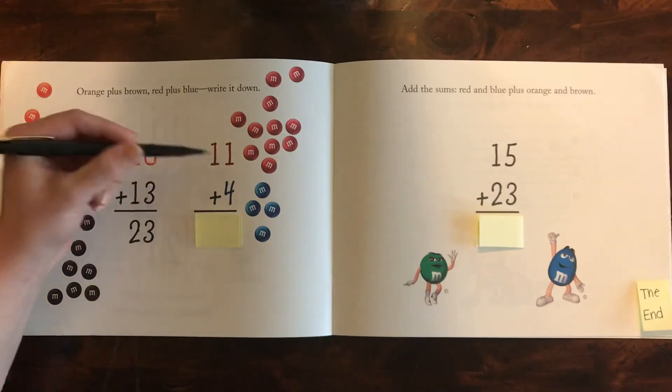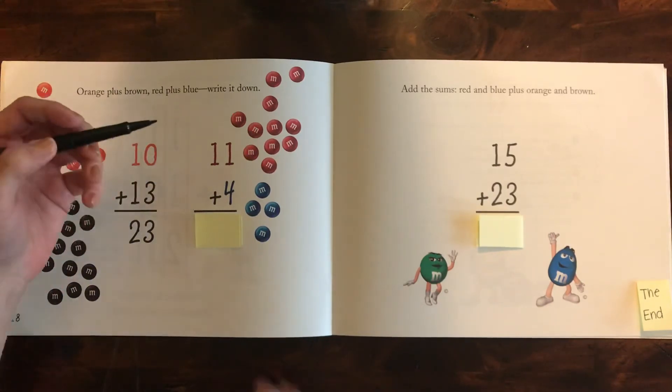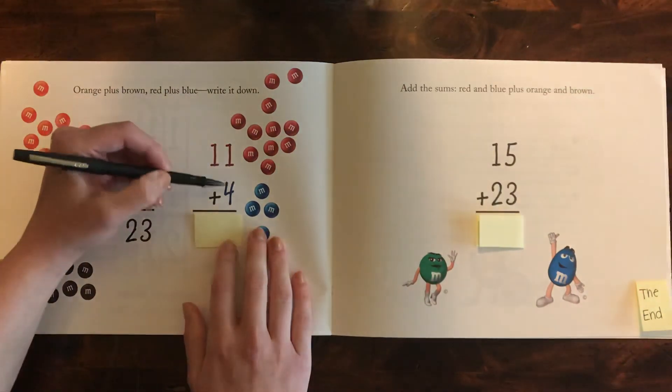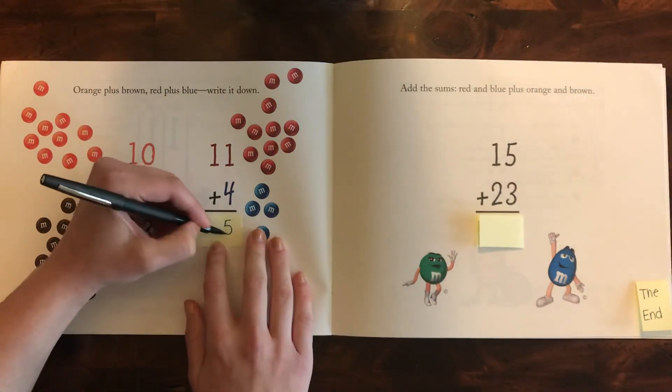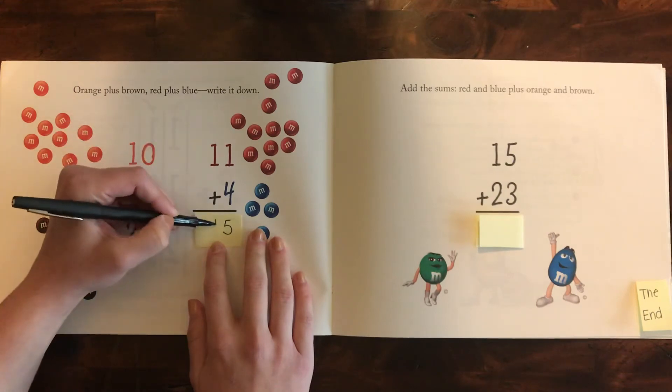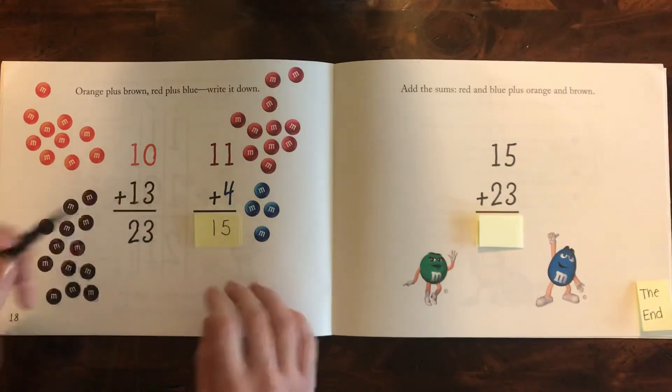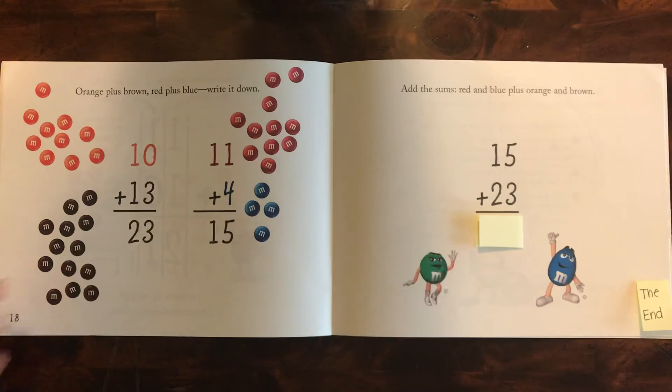Then we have 11 plus four. So let's look at the ones column. One plus four is five. Then look at the tens and it's just one. So 11 plus four is 15. Let's see. We got it.